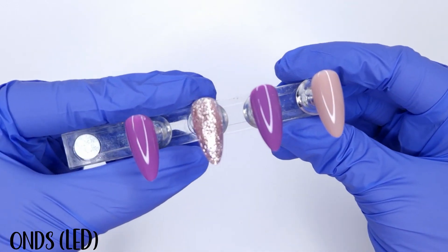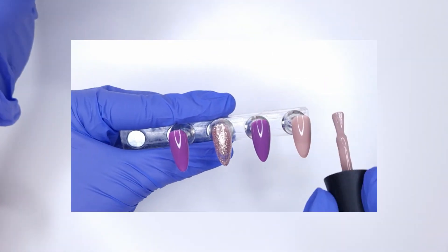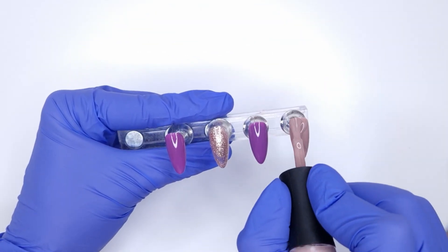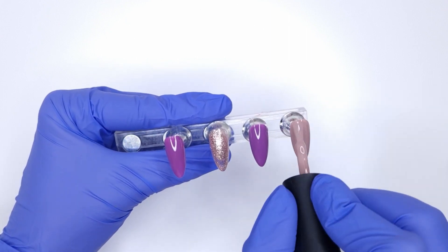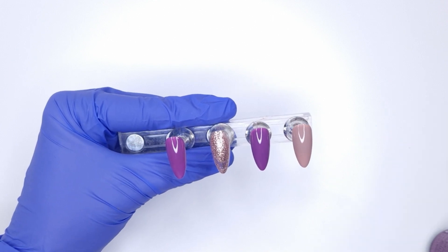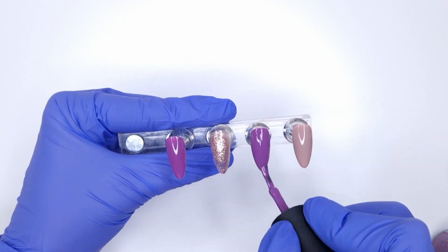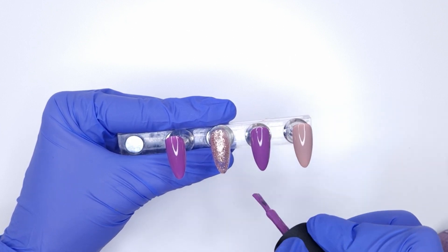Once we've got our first coat of color applied and cured we're going to come in and add that second coat of color. As you can see I work with quite thin layers of gel polish but the Kiki London colors are very highly pigmented. So two thin coats and you have this gorgeous creamy opaque finish.